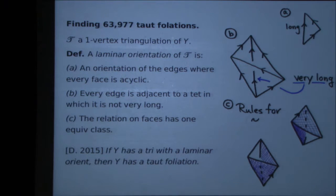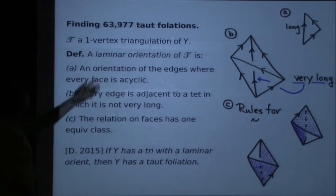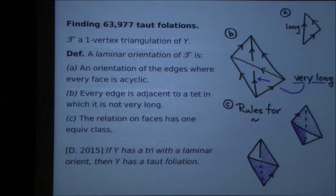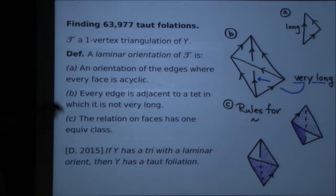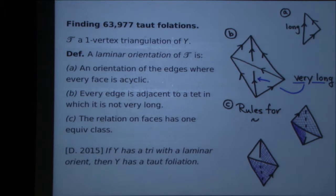For this conference, I wanted to focus on the taut foliation part of the computational story. At least 24% of the manifolds have taut foliations — meaning I had to exhibit almost 64,000 taut foliations on these various manifolds. The technique I used starts with a one-vertex triangulation of the three-manifold, and I find what I call a laminar orientation of the triangulation. The key property is: if you have a triangulation with a laminar orientation, then it implies the existence of a taut foliation.